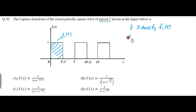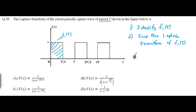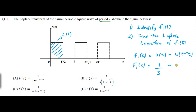The second step is to find the Laplace transform of F1(t). To do that, we write F1(t) in terms of the unit step function: F1(t) = u(t) minus u(t minus T/2). So F1(s) will be 1/s for the first term, and the Laplace transform of the time-shifted function gives e raised to minus T/2 divided by s. Simplifying, F1(s) = (1/s) times (1 minus e raised to minus T·s/2).